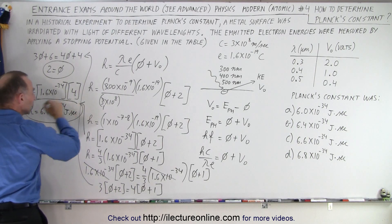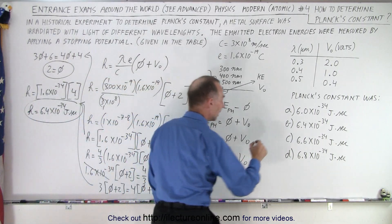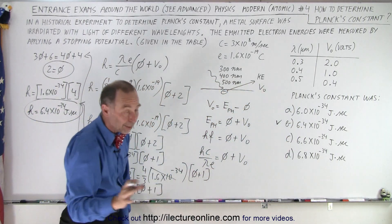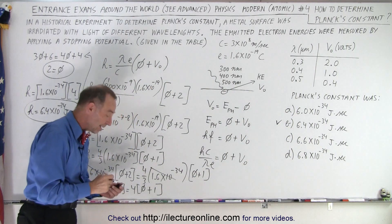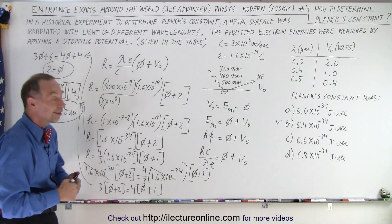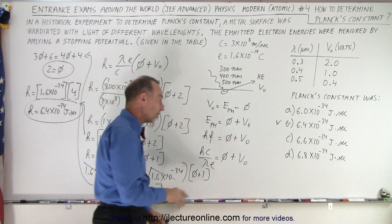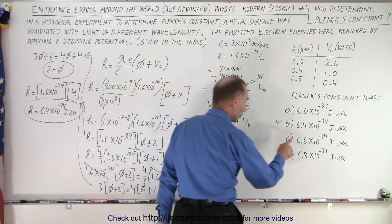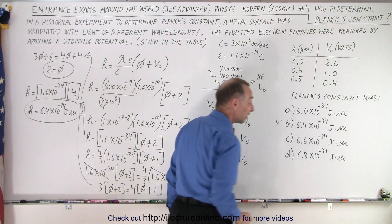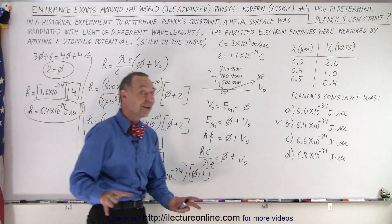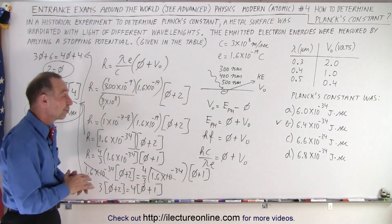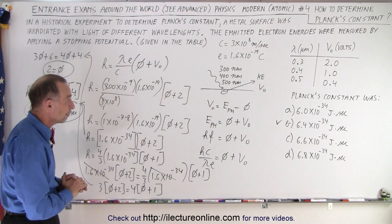The answer that corresponds to this result is answer B. With that initial experiment, the first estimate of Planck's constant was 6.4 times 10 to the minus 34 joule-seconds — fairly close to the actual value of 6.626 times 10 to the minus 34.